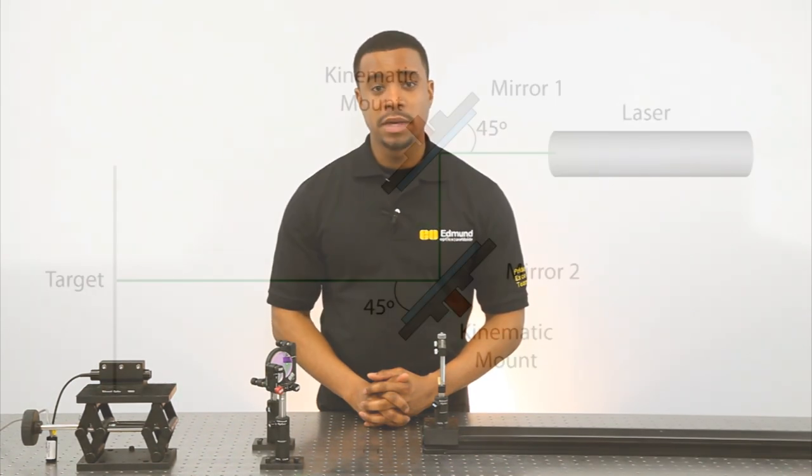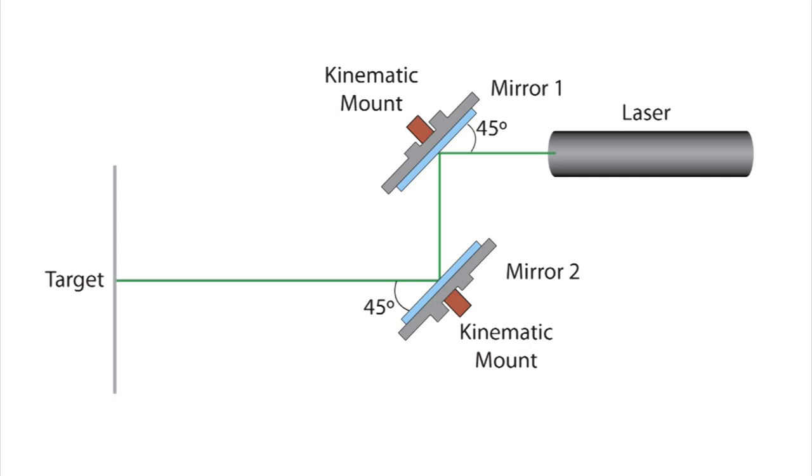The two most common setups for alignment are the Z fold and the figure 4 configurations. You can see the Z shape pattern the beam makes in the Z fold configuration. This configuration is specifically useful for aligning multiple laser beams on the same target.